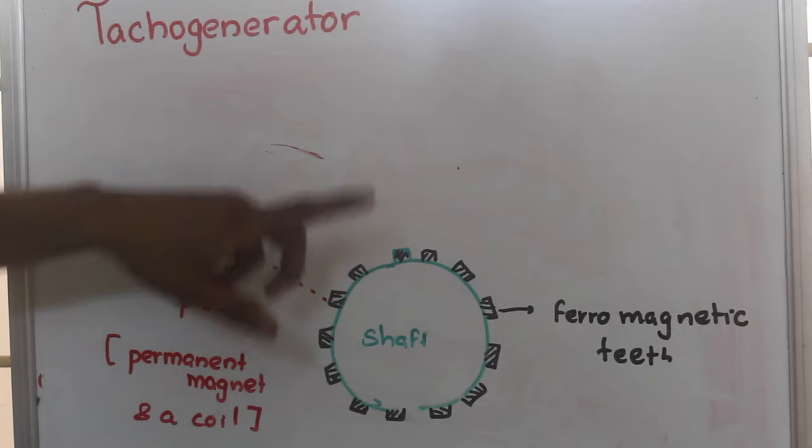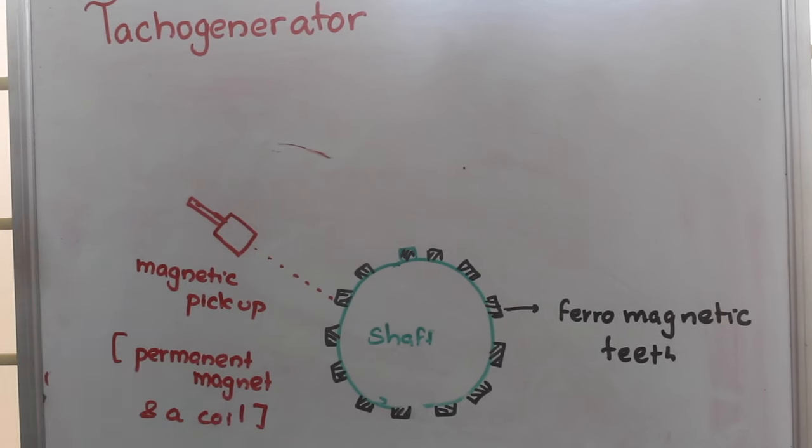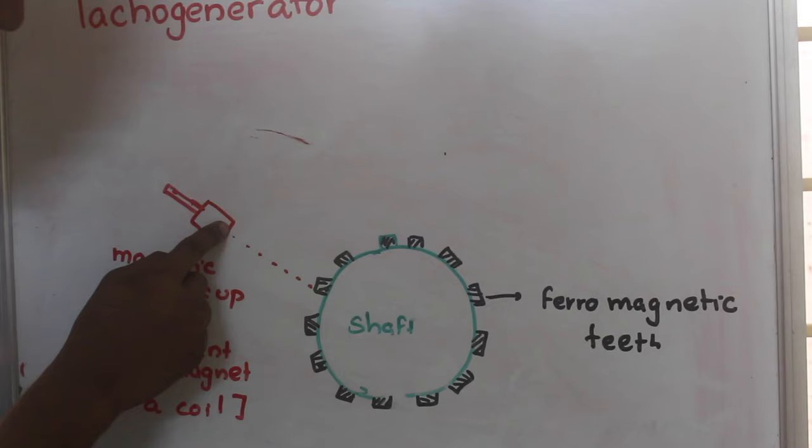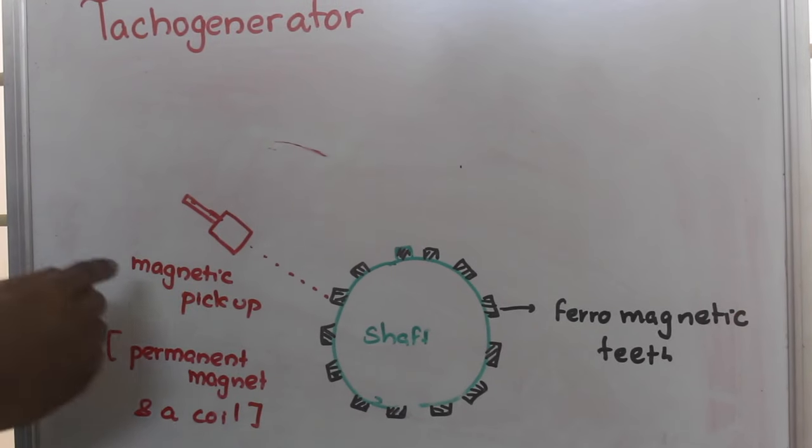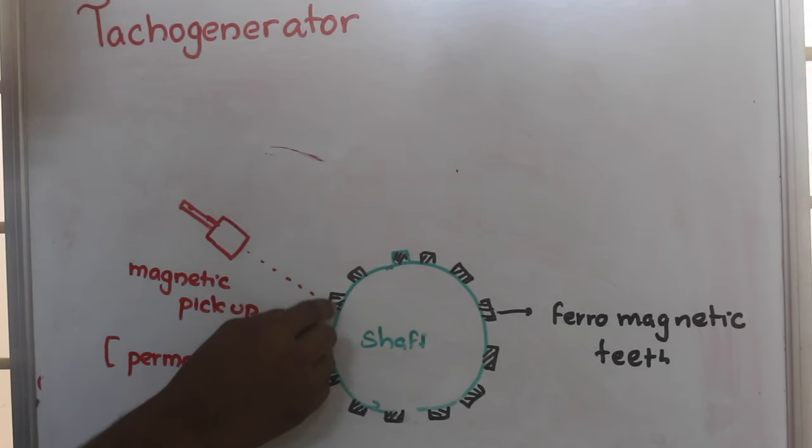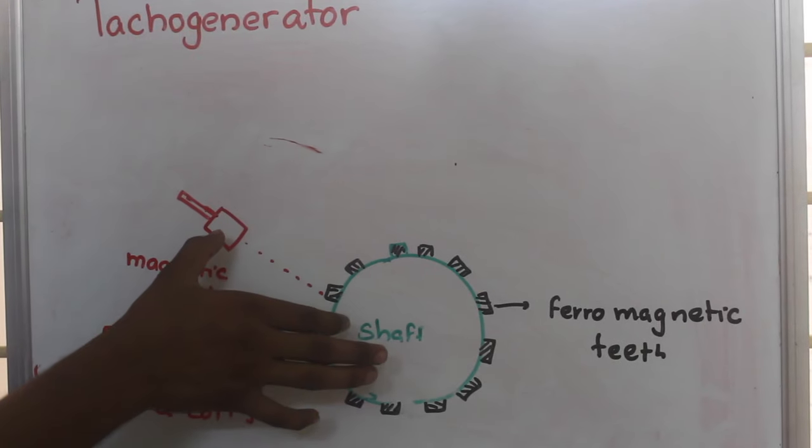When the shaft rotates, the distance between this magnet and tooth will change. When this part comes here, the distance will be increasing.